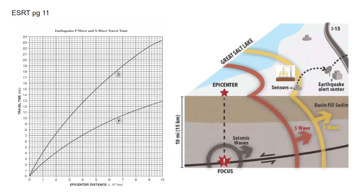Please open page 11 of your reference table. You'll see a graph called 'Earthquake P Wave and S Wave Travel Time.' The x-axis shows epicenter distance — the distance from the epicenter to the sensor — and the y-axis shows travel time, how long the P wave or S wave takes to reach the sensor. We have a P wave curve and an S wave curve showing how long each takes to travel a given distance.